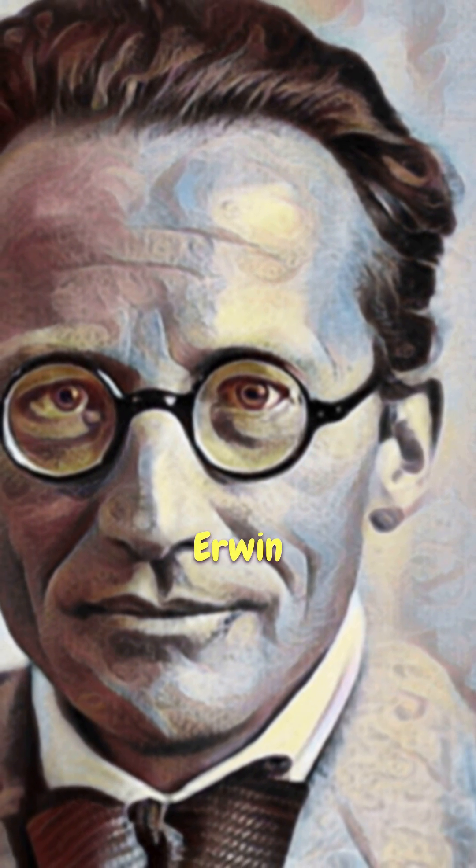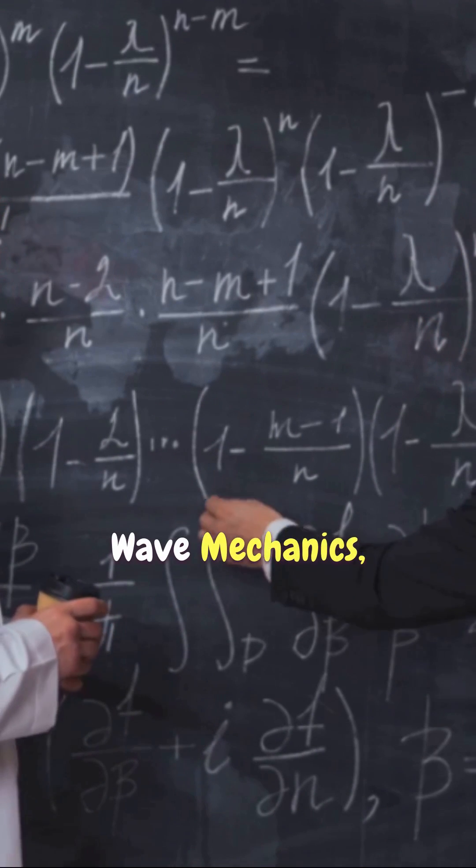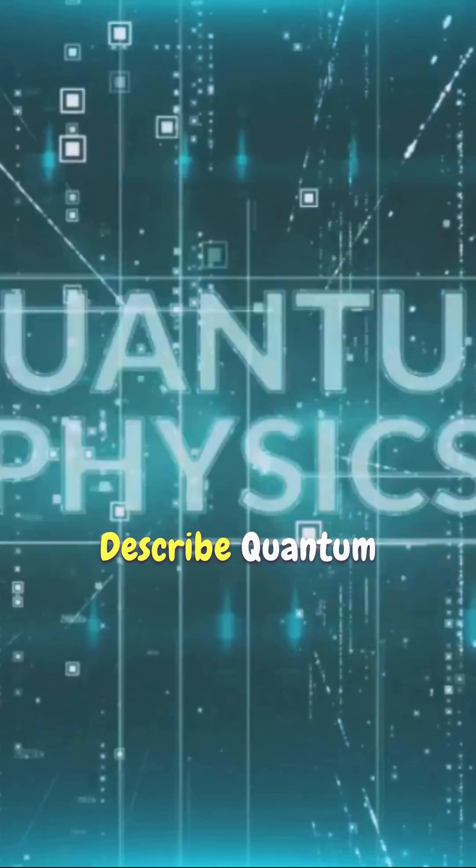Enter stage right Erwin Schrödinger. This fella didn't much care for matrices, instead he devised wave mechanics, using wave functions to describe quantum systems.